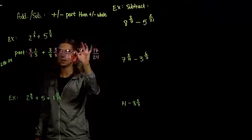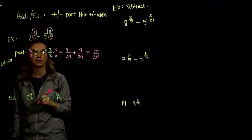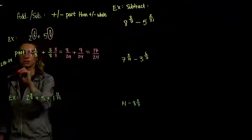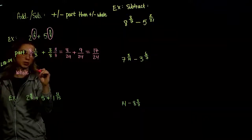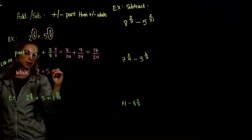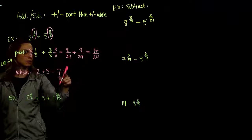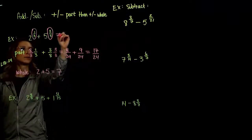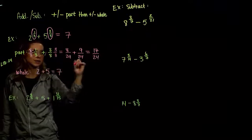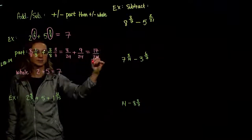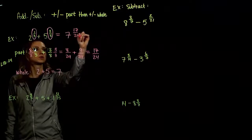That was just the combination of the parts. Now we want to combine the wholes: two plus five gives us seven. So the sum of these two mixed numbers is seven whole parts and seventeen out of twenty-four individual parts — seven and seventeen twenty-fourths.